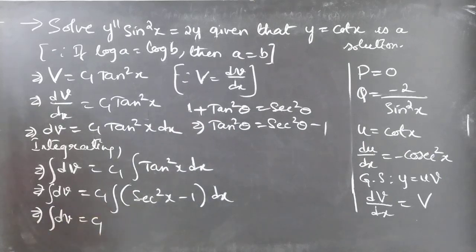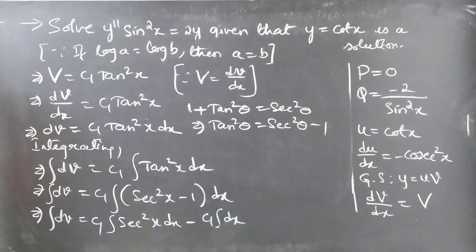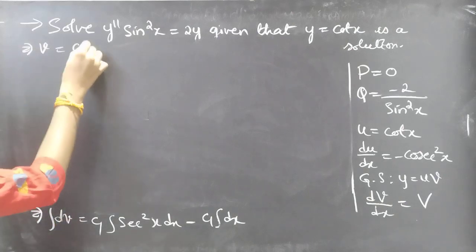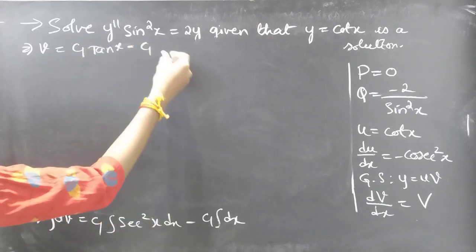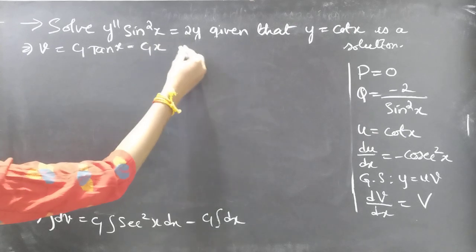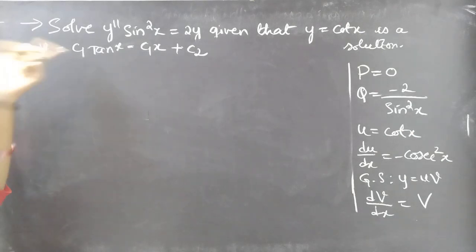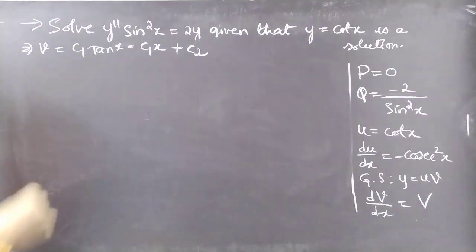The RHS becomes C₁∫sec²x dx − C₁∫dx. Integrating: v = C₁ tan x − C₁ x + C₂. We now have both u = cot x and v, so we can write the general solution using y = u·v.